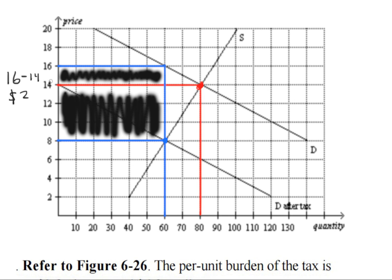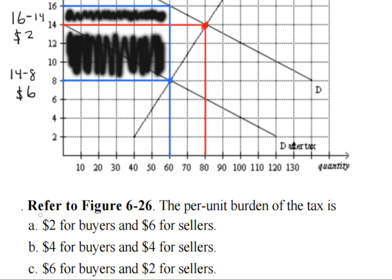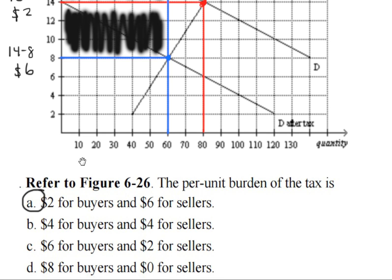As we can see right here, for the sellers, it will be $14 minus $8, which is a $6 per-unit tax burden. So, right here, the answer choice is A of the four choices.